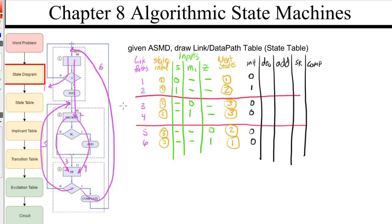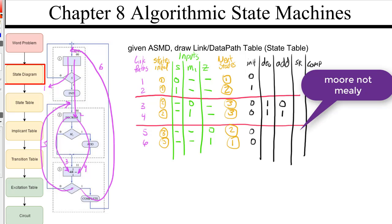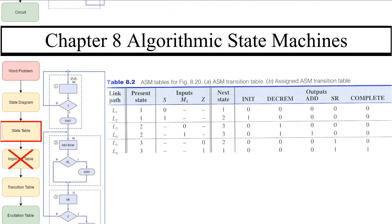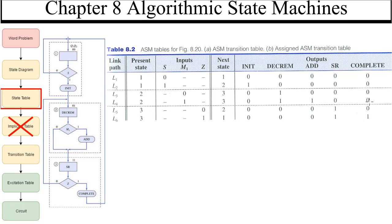Decrement: we want to set decrement no matter what at state two, because it's more of a Moore kind of circuit. Add: we only want to set on link path four — that's a Mealy kind of circuit. Shift right: we want to do no matter what, that's also Mealy. And complete: we only want to set on link path six. So the rest of these outputs are zeros. Let's check our work, and everything looks perfect.